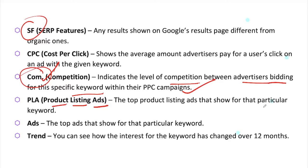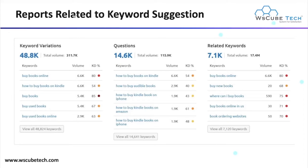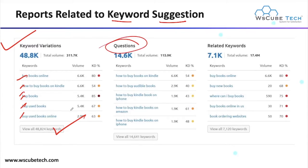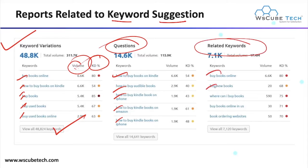The next feature is PLA, which stands for Product Listing Ads — the top product listing ads that show for a particular keyword. We can also see the top ads for a keyword in this tool. Next we have trends, where you can see how the interest for a keyword has changed over 12 months. We can also see a keyword suggestions report showing keyword variations, a complete list, questions related to the keyword, and their corresponding volume and keyword difficulty, as well as related keywords.